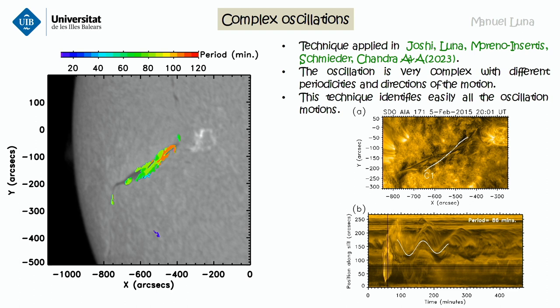We apply this technique also for other events. In one case, the oscillation is very complex — it's a very large filament with many regions showing several different periods. In this plot, I'm showing the period for every single pixel. In one region the period is more or less 80-something minutes, and in the orange region it's more or less 100 minutes. We can compare this also with the time-distance diagram, and we see that it's a very complex motion with several periodicities. This technique shows that it can be applied for complex oscillations too.